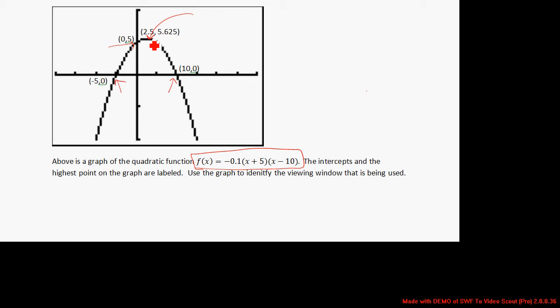We can use the points to help identify the viewing window that is being used. It appears that our x-intercepts are passing right through tick marks.